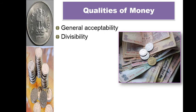Next is divisibility. As we discussed, one of the difficulties of the barter system is the indivisibility of certain goods. For example, Mr. A has a stock of wheat and he wants a goat in exchange. But the owner of the goat wants only half of the stock of wheat. So at that time it is not possible to divide the goat into small different parts.